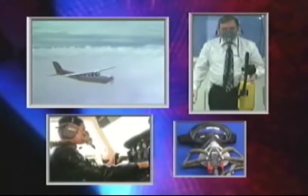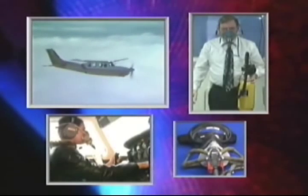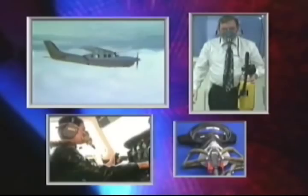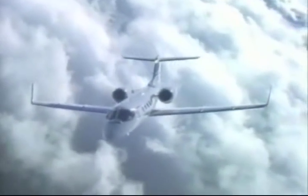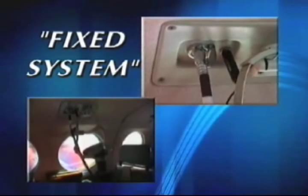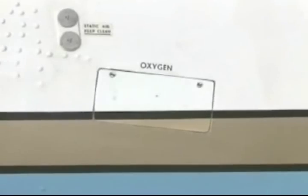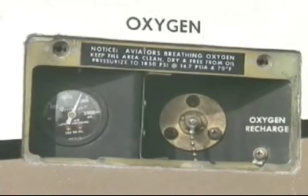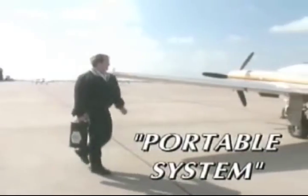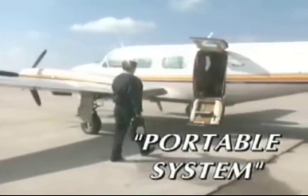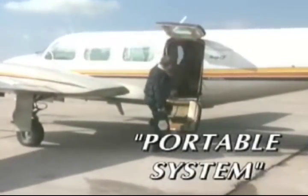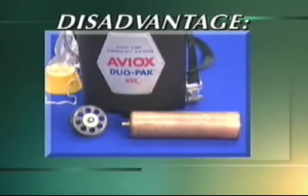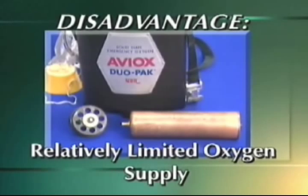The aviation industry has designed and manufactured widely diverse types of oxygen equipment for general aviation aircraft. Pilots who routinely fly at altitudes above 10,000 feet MSL commonly use a fixed oxygen system. Fixed systems are normally serviced through an exterior fuselage valve, and their major advantage is greater oxygen storage capacity. A portable oxygen system is a self-contained unit that can be taken on and off the aircraft, designed especially for short-duration flights above 10,000 feet MSL. One disadvantage of portable oxygen equipment is its relatively limited oxygen supply.